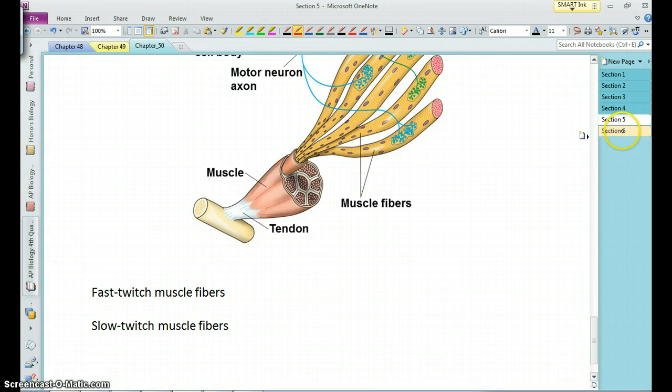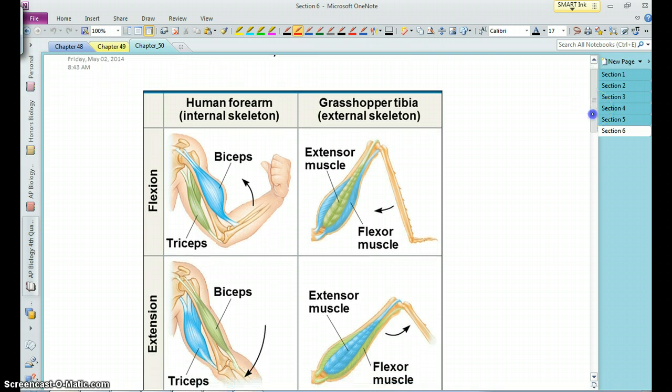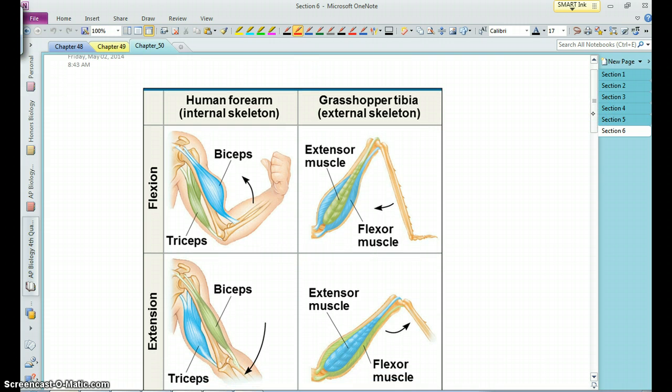Okay, now, last section: skeletal systems. So whether you have an internal skeleton like us or an external skeleton like an insect, you're going to have muscles attached to that skeleton that allows you to move joints. And when you bend a joint, this is what's known as flexing it, and when you straighten out a joint, this is what's known as extension.